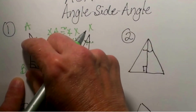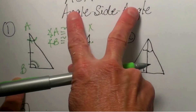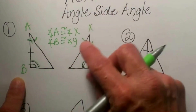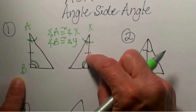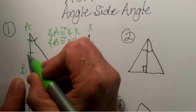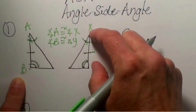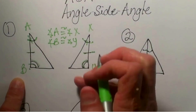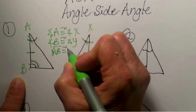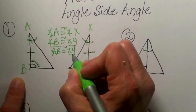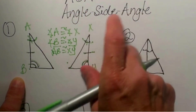Now we have two pairs of matching angles in both triangles, but we also need the side that falls between the two angles. Since X and Y are the angles, side XY must be the congruent side — and yes, it is marked congruent. So AB is congruent to XY. The included side between those two angles gives us three parts: angle, side, angle, in that order.